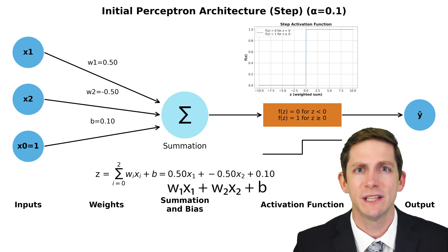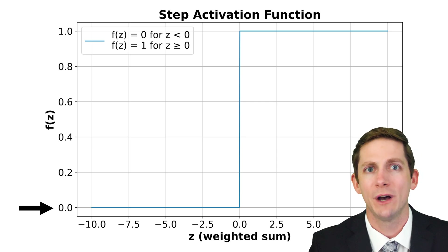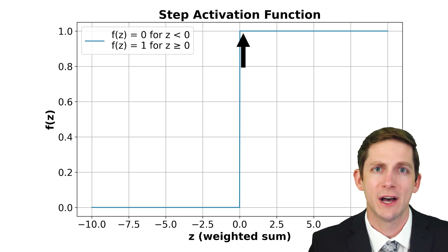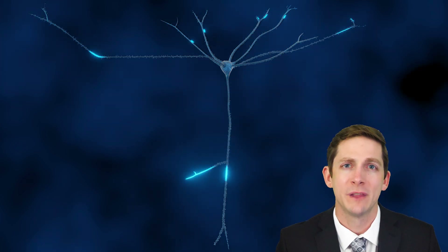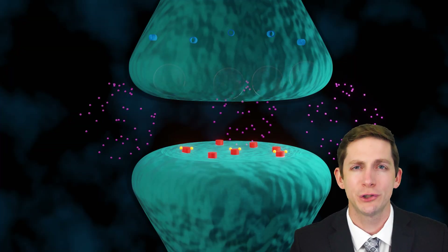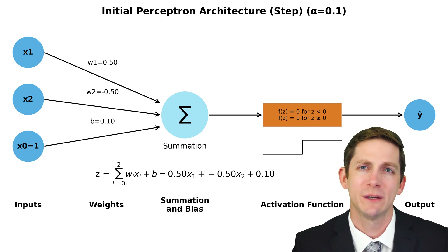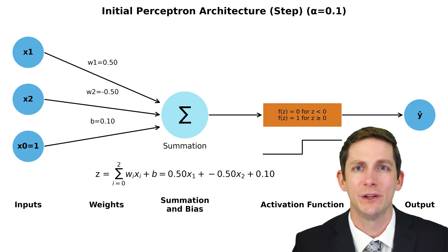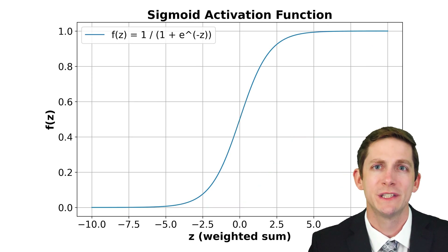The result of the weighted sum is then sent to an activation function. A step activation function is a basic activation function, where if the summation is below some value the output will be off, or 0, and if the summation is above some value the output will be on, or 1. This is similar to the output of biological neurons, where the action potential being sent out of the cell body is an all-or-nothing, on-or-off event. It is up to the synapse to then determine how much charge and what type of charge is transferred. In an artificial neural network, the weights serve a similar function and determine the strength of connection between neurons. There are three other commonly used activation functions: relu, sigmoid, and tanh.